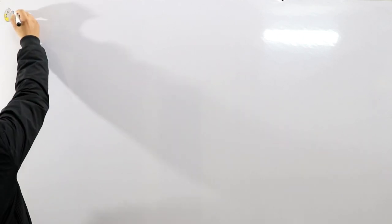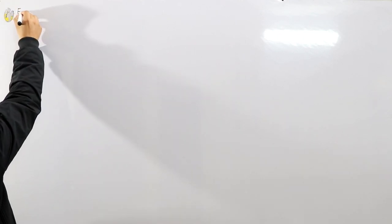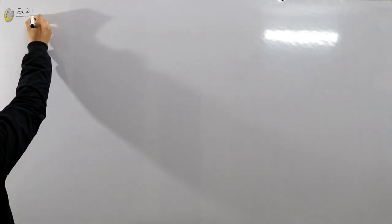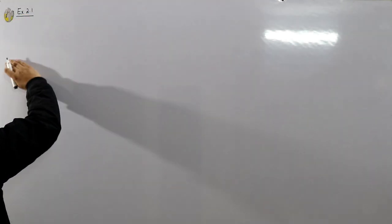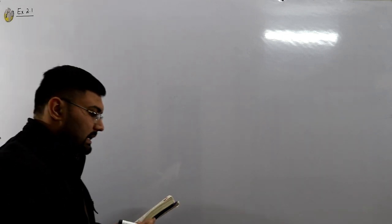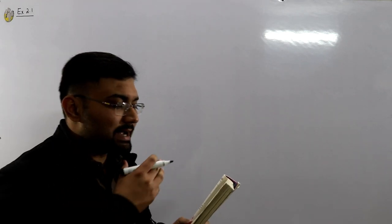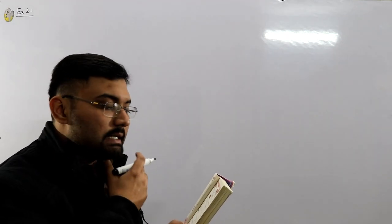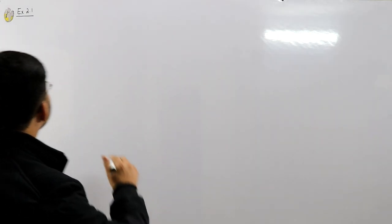This is not properly drawn on graph paper so I recommend drawing it on graph paper so you can understand properly. Example 2.1 says that a ship leaves a port and travels 200 kilometers at 30 degrees north of east.